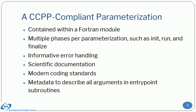This slide explains what makes a parametrization CCPP compliant. The parametrization or scheme must be contained within a Fortran module. The scheme may contain multiple execution phases. The error information must follow a specific format and be meaningful and helpful. The parametrization is accompanied by scientific documentation describing the essentials. The scheme needs to follow modern coding standards, and metadata are needed for all arguments provided to the physics parametrization.